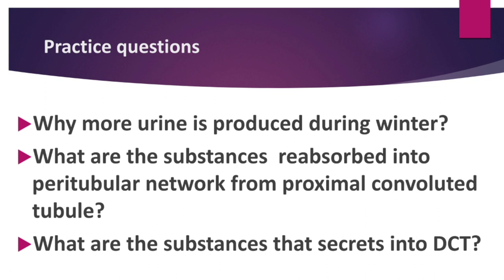Why is more urine produced during winter? In winter, sweat pores are blocked because the climate is cold, so sweat is produced in very small quantities and waste is not eliminated through sweat. Therefore, more waste from the blood is excreted as urine, leading to increased urine production in winter.